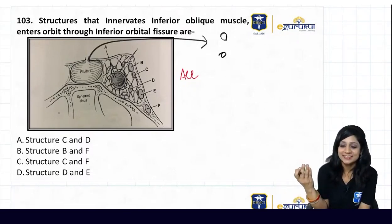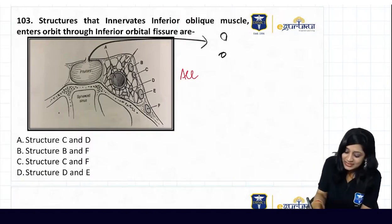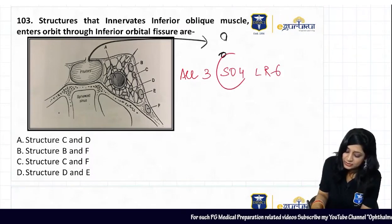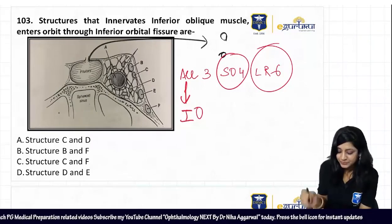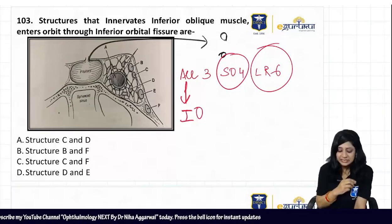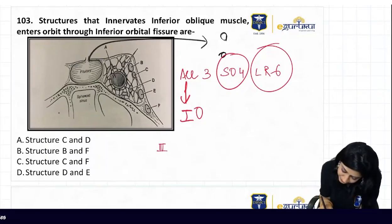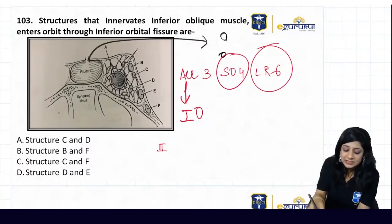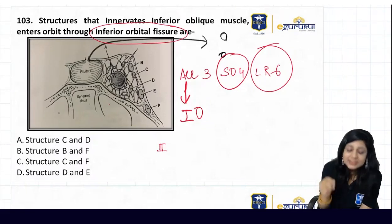All are supplied by third nerve except for SO4 and LR6. So SO4 and LR6, they are not asking. So it is supplied by the inferior oblique - supplied by the third nerve. So first structure they are asking you about the third nerve, and you have to tell me which structure is passing through this inferior orbital fissure. Tell me guys, and what is this? What is this?